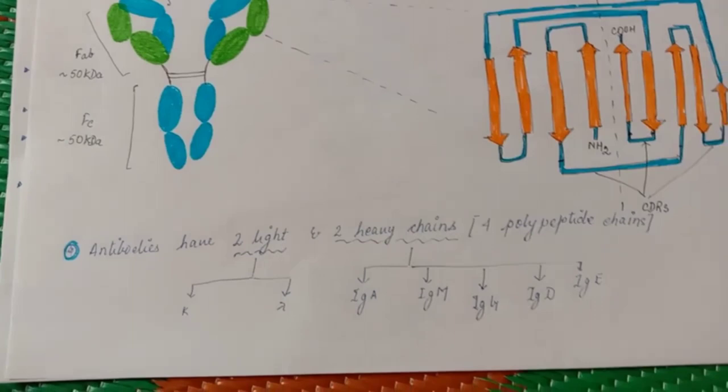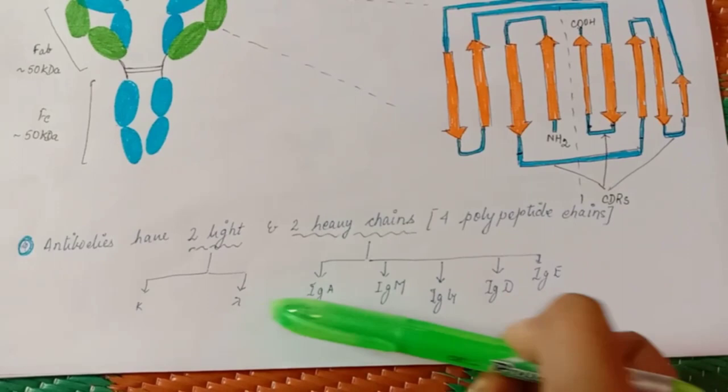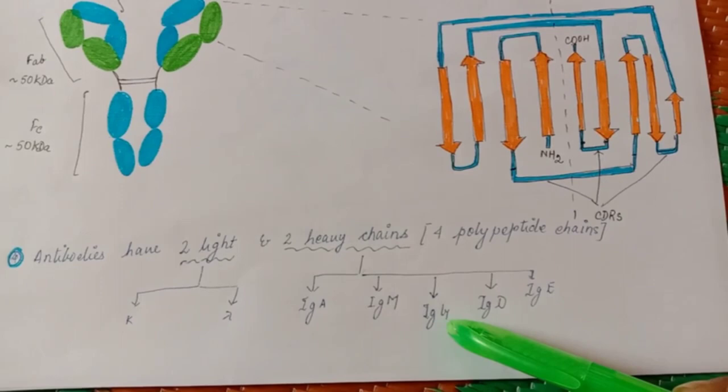You might be seeing we can have light chain, heavy chain separated for a better study. Antibody has two chains: two light chains, two heavy chains. Four polypeptide chains are present. These two light chains are kappa and lambda. The heavy chain consists of IgA, IgM, IgG, IgD and IgE.